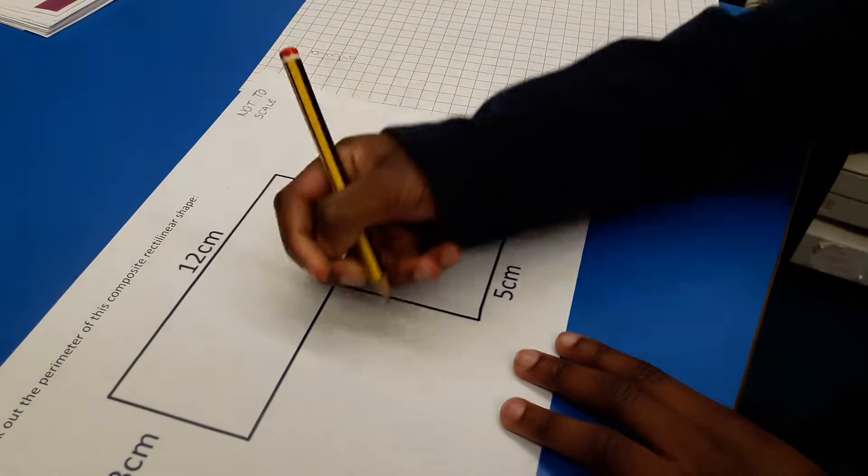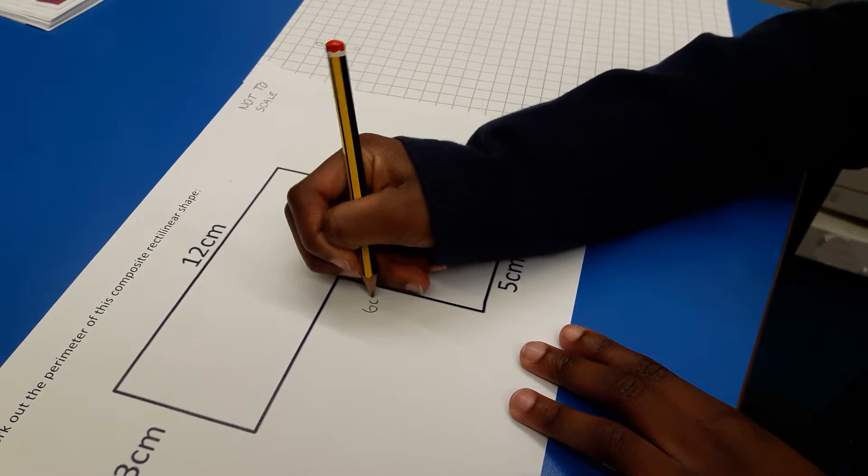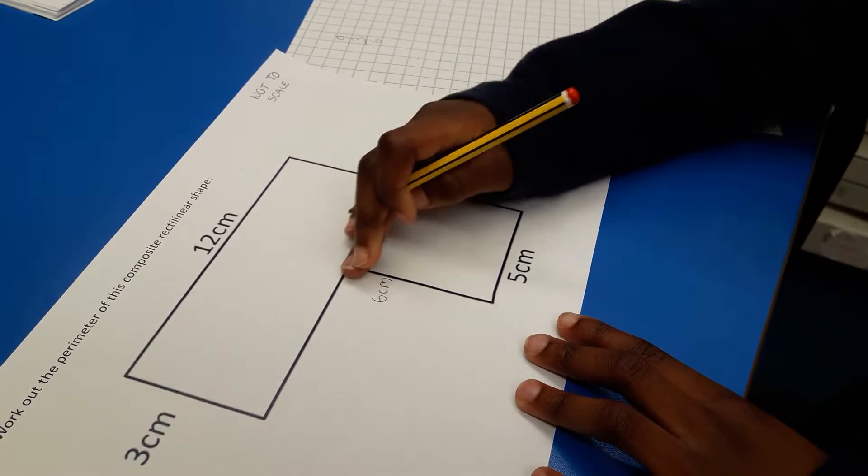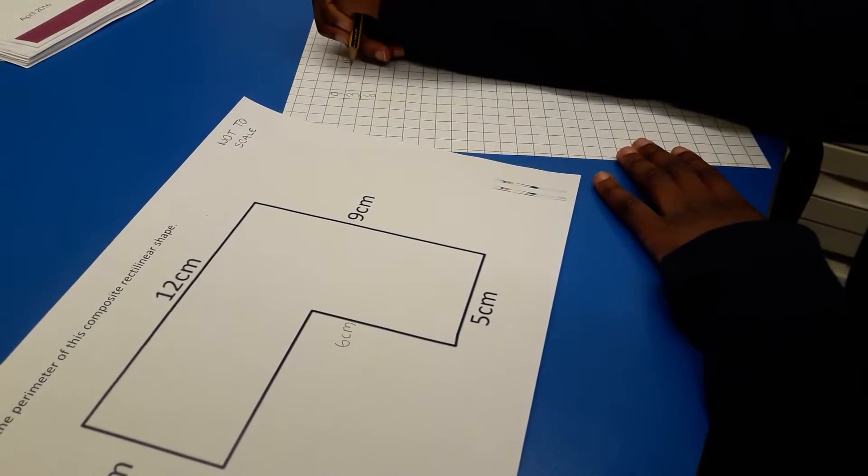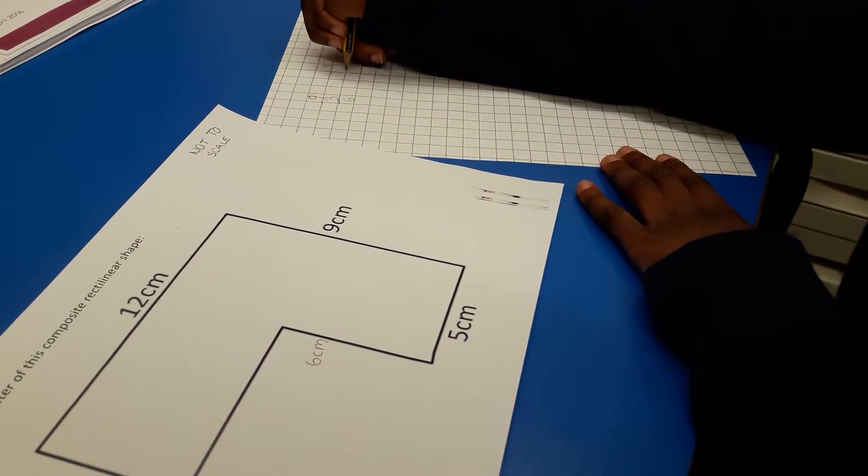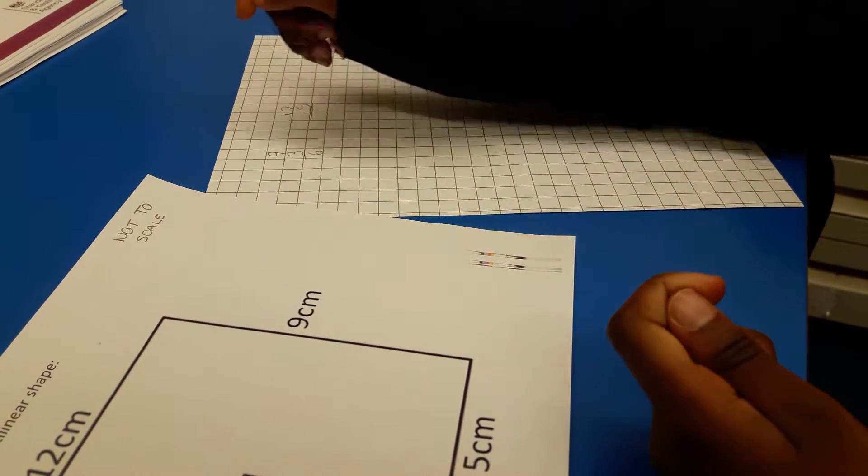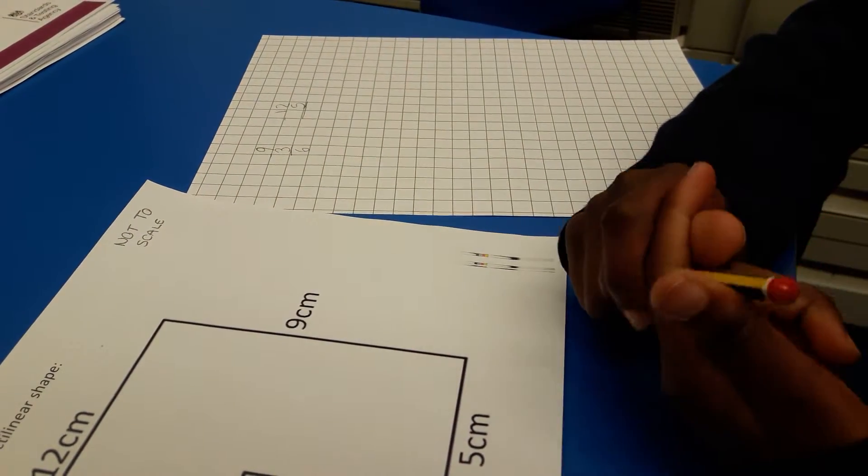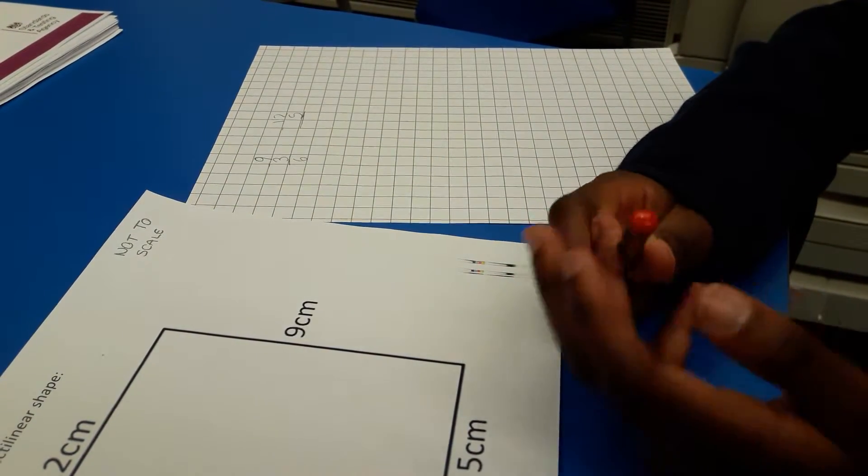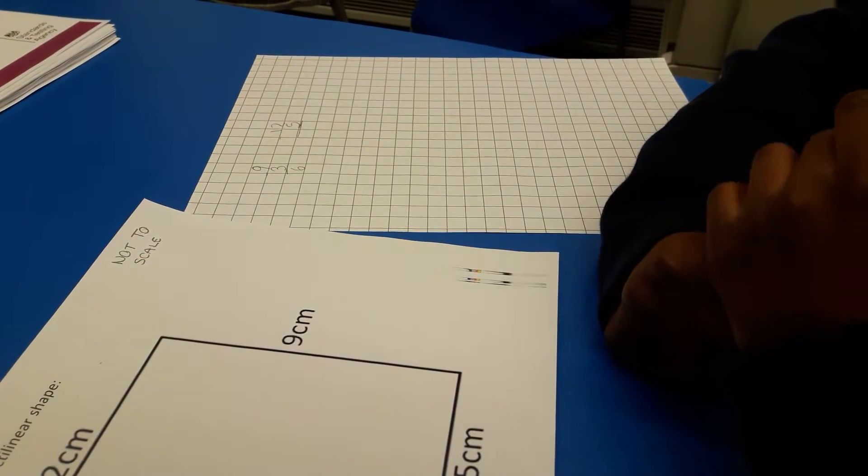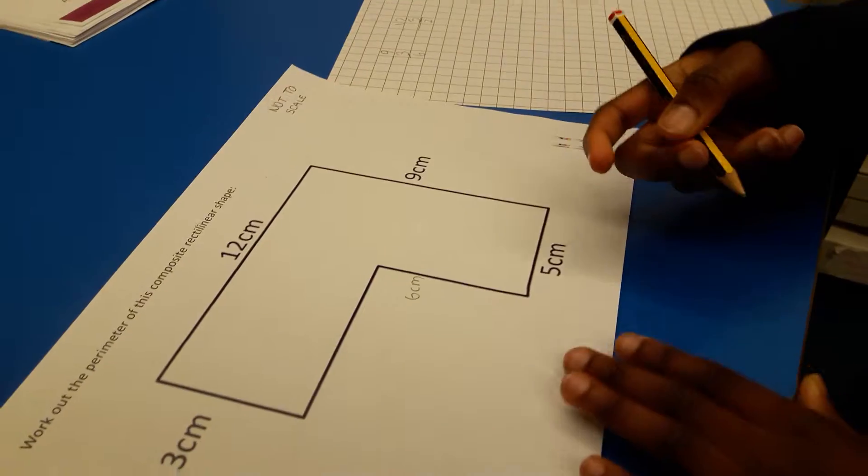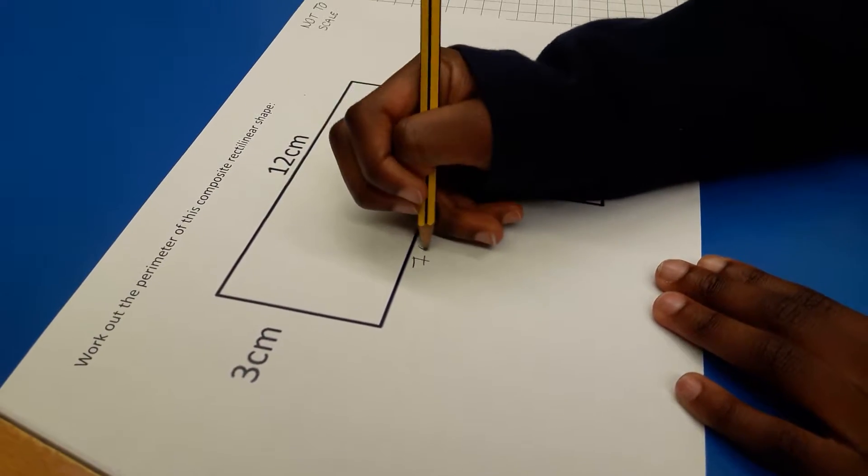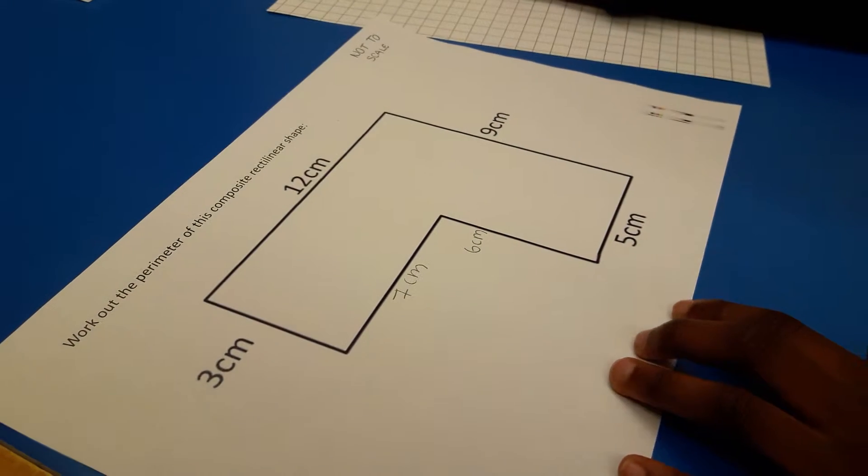Which is six, so you'll get six centimeters. And then to figure out this side, you need to take away this side from this side, so twelve take away five. You have to start from twelve and then go back five: twelve, eleven, ten, nine, eight. So the answer will be seven, so you'll get seven centimeters.